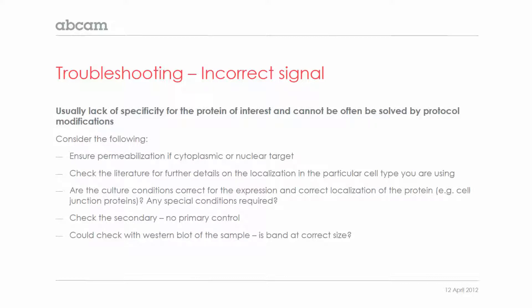The next problem is if you have an incorrect signal. This is the most difficult one to troubleshoot because it usually shows a lack of specificity for the protein of interest. It can't always be solved by protocol modifications, however there are some things to consider. Ensure permeabilization if it's a cytoplasmic or nuclear target. Check the literature for further details on the localisation in that particular cell type you're using, and check if the culture conditions are correct for the expression and correct localisation of the protein.